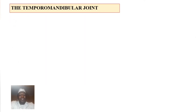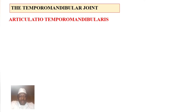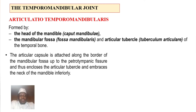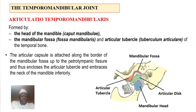Now let's talk about the temporomandibular joint — articulatio temporomandibularis. This joint is formed by the head of the mandible (caput mandibulae), the mandibular fossa (fossa mandibularis), and the articular tubercle (tuberculum articulare) of the temporal bone. It is an articulation between the mandible and the temporal bone. The articular capsule is attached along the border of the mandibular fossa up to the petrotympanic fissure, enclosing the articular tubercle and embracing the neck of the mandible inferiorly.